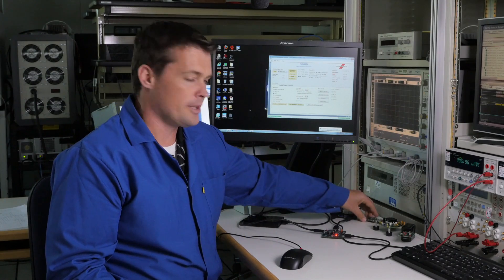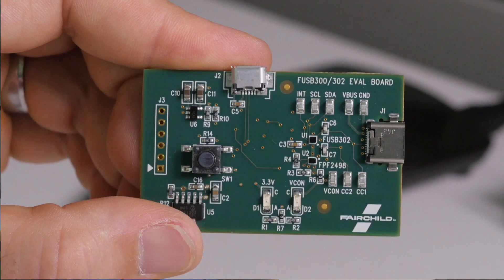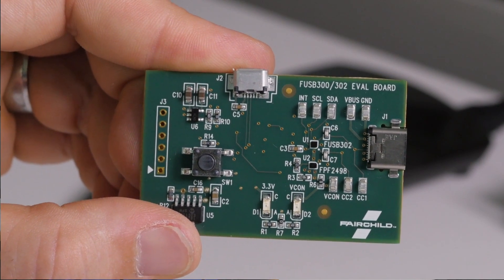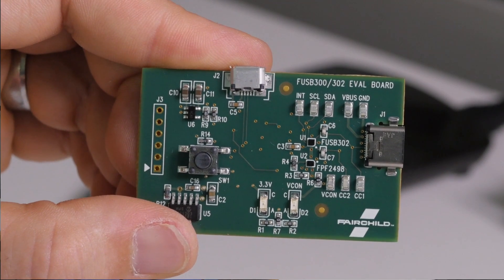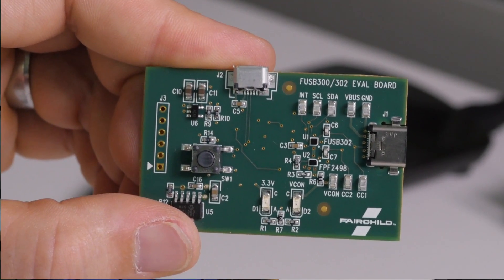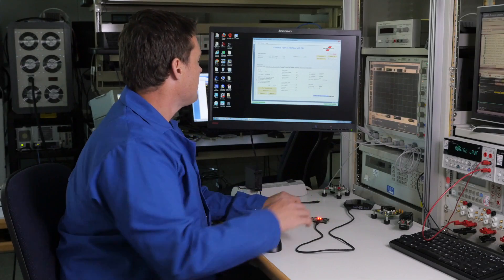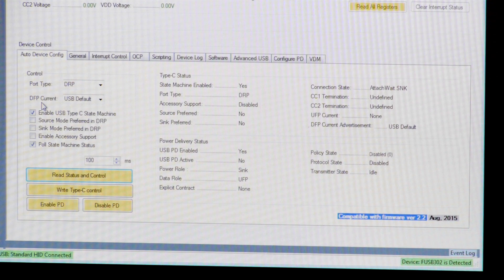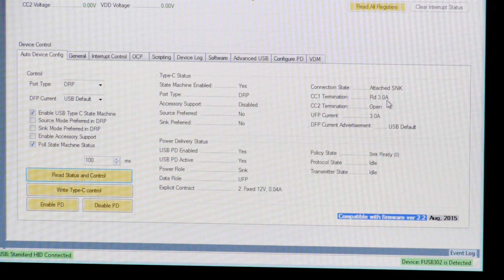Let's dig a little deeper and make the same connections with the FUSB302 Type-C port controller with power delivery. USB power delivery is a recent protocol that becomes much more exciting with the new Type-C connector. The FUSB302 is configured as a dual-role port just like the FUSB301. When I connect the Type-C charger, the FUSB302 reports the same things. It is connected as the sink and indicates that the Type-C charger is capable of providing 3 amps of current.